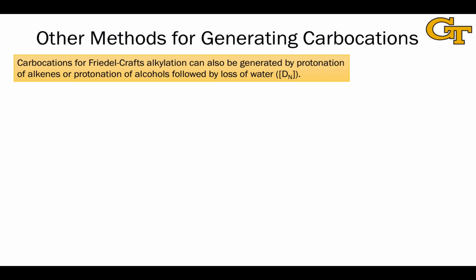What we just saw was using a Lewis acid, AlCl3, to essentially help pull off the chlorine from an alkyl chloride. But there are other methods that we've seen for generating carbocations, and these can also be used as precursors to Friedel-Crafts alkylation processes.